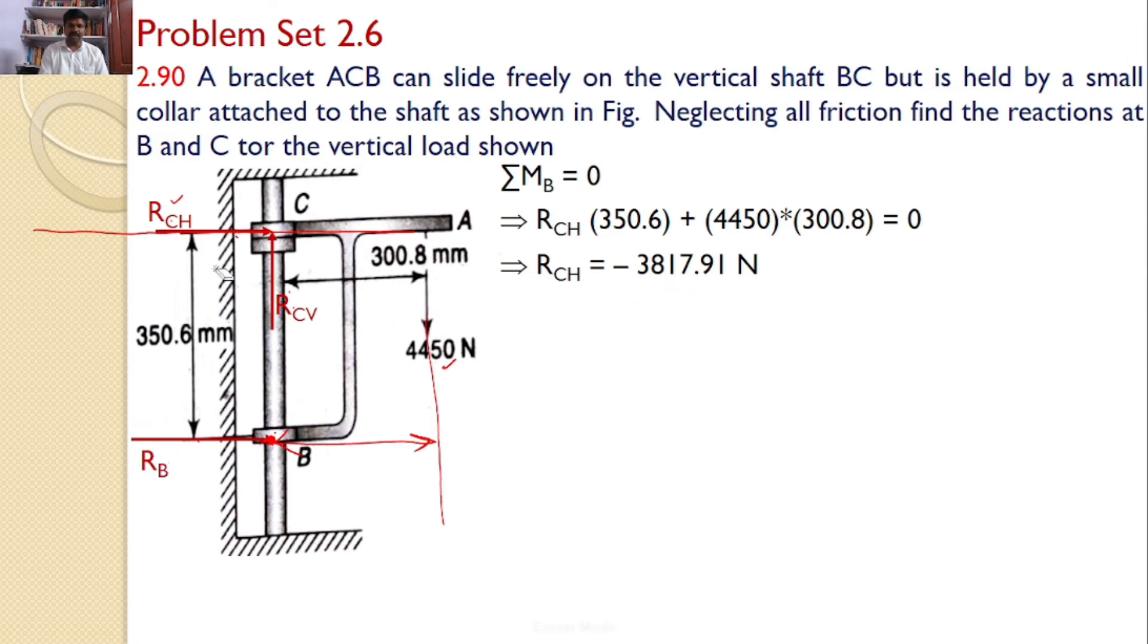Upon simplification, you will get RCH is equal to minus 3817.91 Newtons. So what is the meaning of this minus? The initial assumed direction of RCH which was assumed towards the right side is wrong and RCH is towards the left side. This is the direction of RCH but the magnitude is 3817.91 Newtons only.